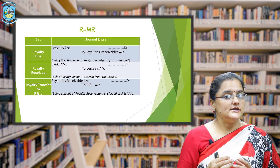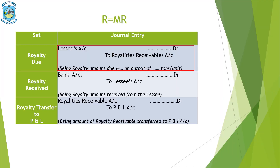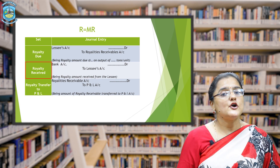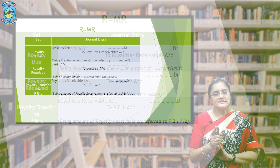In the books of the landlord, situation one — royalty equals minimum rent: the first entry for royalty due is lessee's account debit to royalty receivables account. The second entry when royalty is received is bank account debit to lessee's account. The third entry transfers royalty income to P&L: royalty receivables account debit to P&L. These three entries are the mirror image of the lessee's entries.